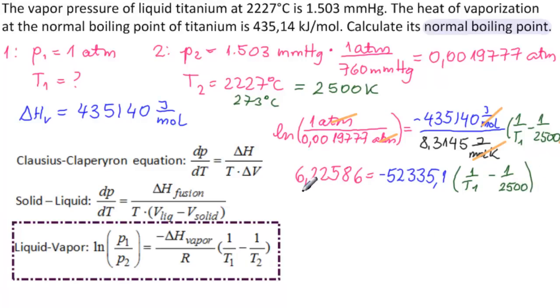So we need 6.22586, divided by minus 52335.1, plus 1 over 2,500 equals 1 over T1.